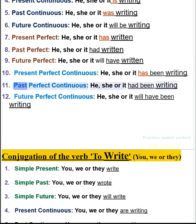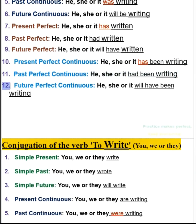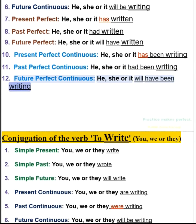11. Past perfect continuous: he, she or it had been writing. 12. Future perfect continuous: he, she or it will have been writing.